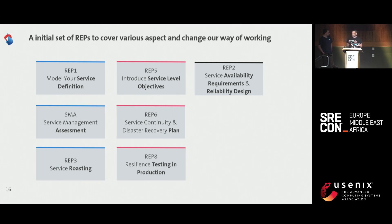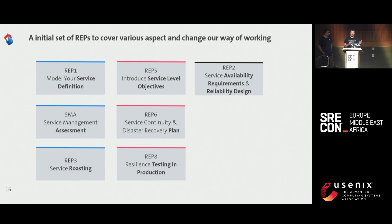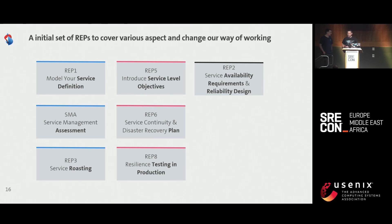We sit together with the business to figure out what we can afford — which amount of user journeys we can lose. Then we create a reliability design, estimate the cost, and go back to the business. For example: my reliability design costs 5 million — I can provide you four nines with it. Too much? Okay, I can give you three nines for 500,000. Do you want that? Then they say, yeah, that's good value.